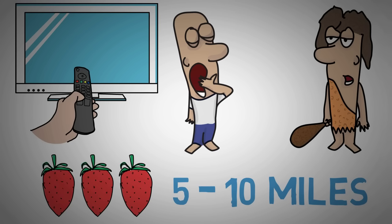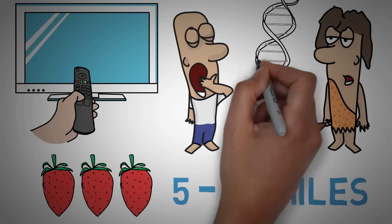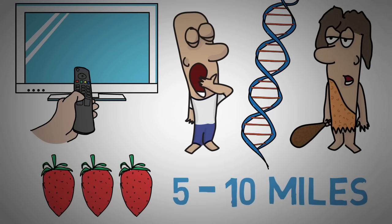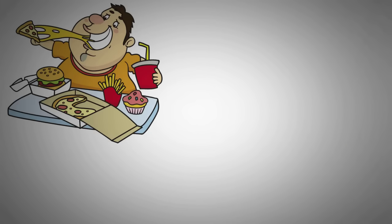Since it takes tens of thousands of years for our biology to evolve, you can see there's a huge mismatch between our lifestyle and our genes. Today we no longer hunt and gather and not only is that a problem, but it poses one of the biggest threats to our continued survival.